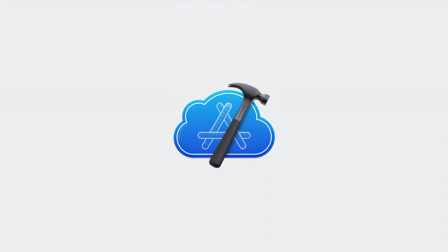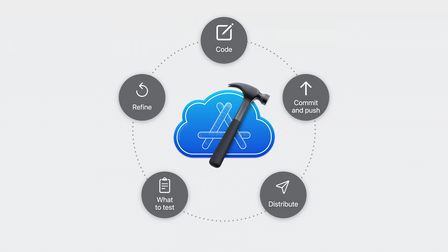Building and distributing your app can be a lot to juggle. Xcode Cloud automates the task of distribution, allowing you to focus on development. Xcode Cloud is the continuous integration and delivery service built by Apple, specially designed for Apple developers. I'd like to set up Xcode Cloud to automatically create a build when I submit changes to a feature branch, send that build to TestFlight, and include notes on what to test — all using an Xcode Cloud workflow.